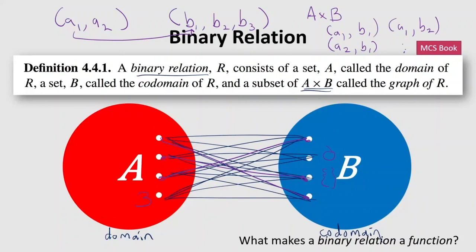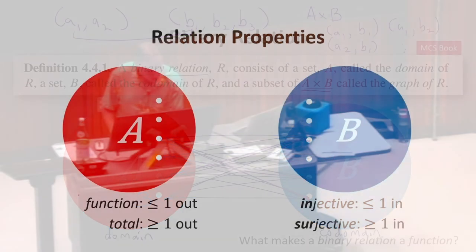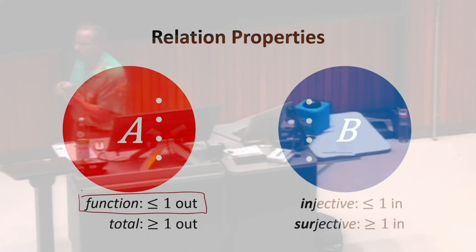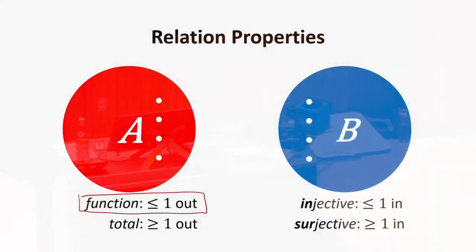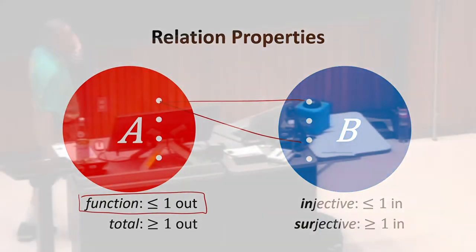The properties that are commonly used to describe relations. The function means for every element of the first set, which is the A set here, the number of edges out of it is either zero or one. If we have one element of A that has edges to two elements of B, it's not a function. Is that consistent with the way we think about functions in computing? Yeah, sure, right. Lots of functions we write in code can, for the same input, return different outputs. But they're not really functions. At least they're not mathematical functions if they do that.